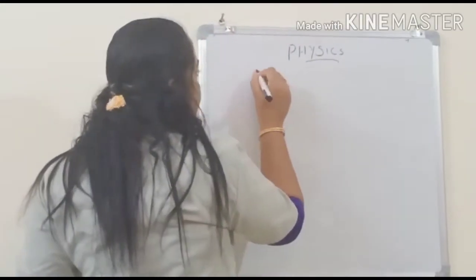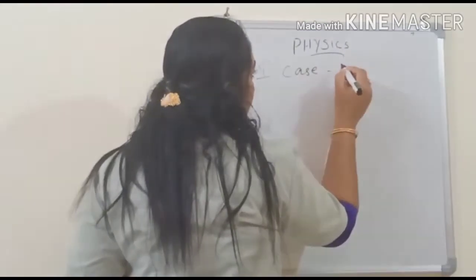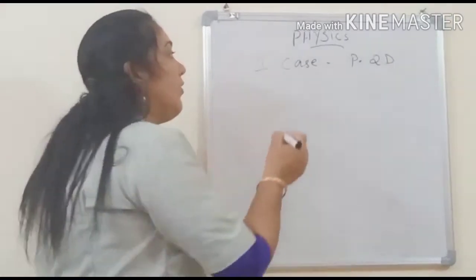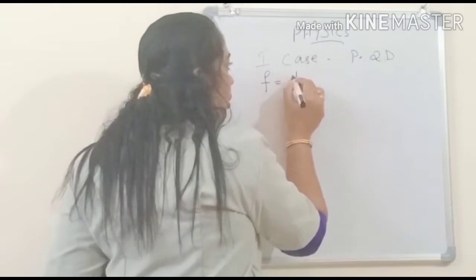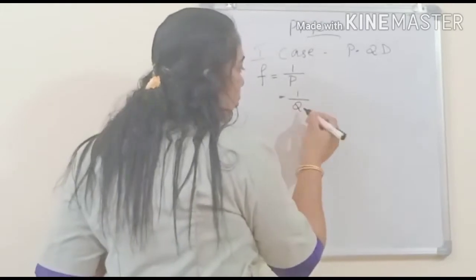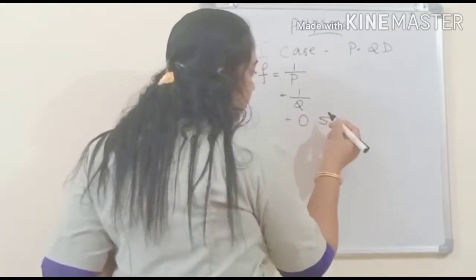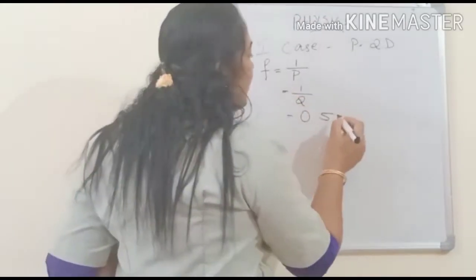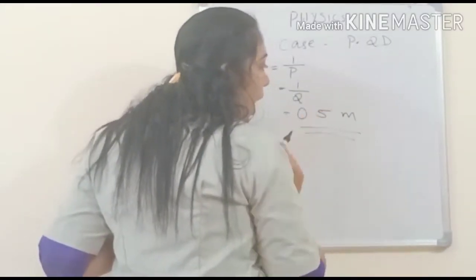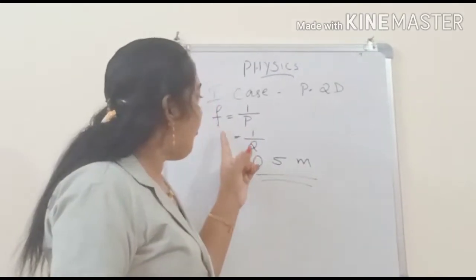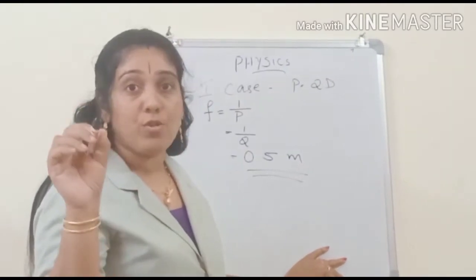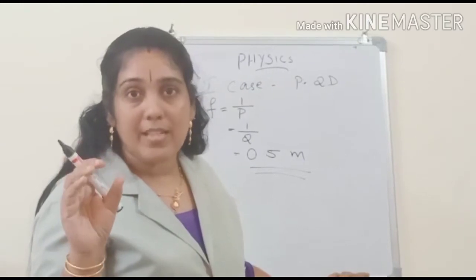For the first case, power P equals 2D. We want to calculate focal length: F equals 1 by P, which equals 1 by 2, that is 0.5. The unit is meter, so F equals 0.5 meter. Here F is positive, so the lens is convex. For a convex lens, F is positive and the image is real.